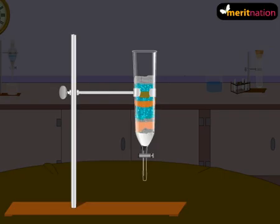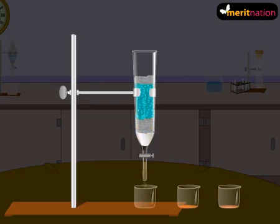The component that is more weakly adsorbed will move faster through the column and therefore will get separated first. The component that is most strongly adsorbed, as expected, will be separated the last.